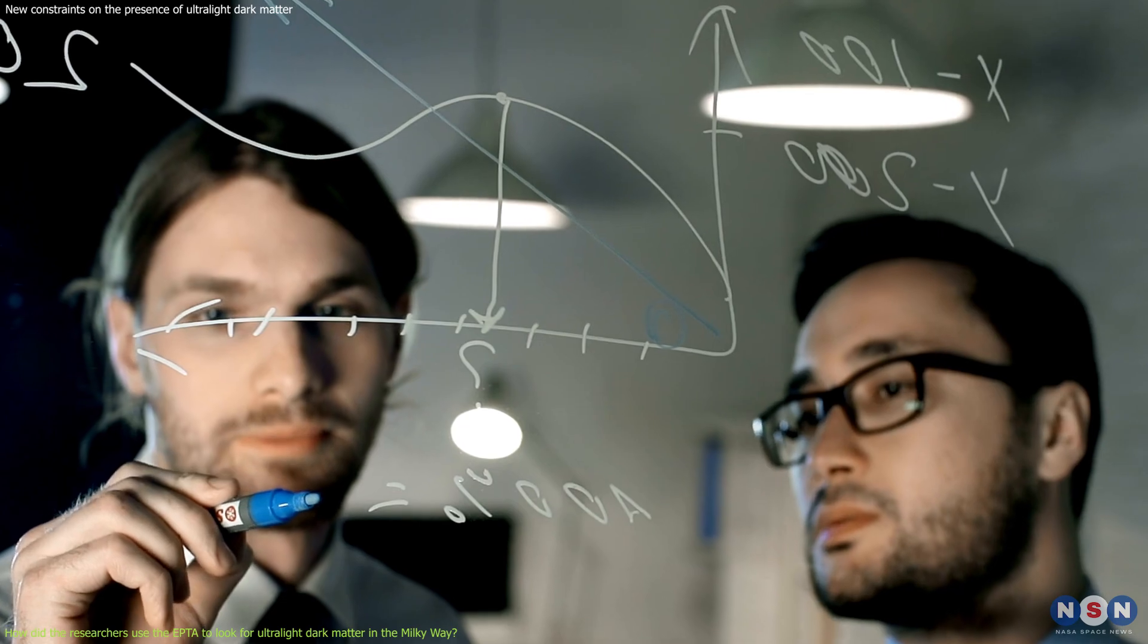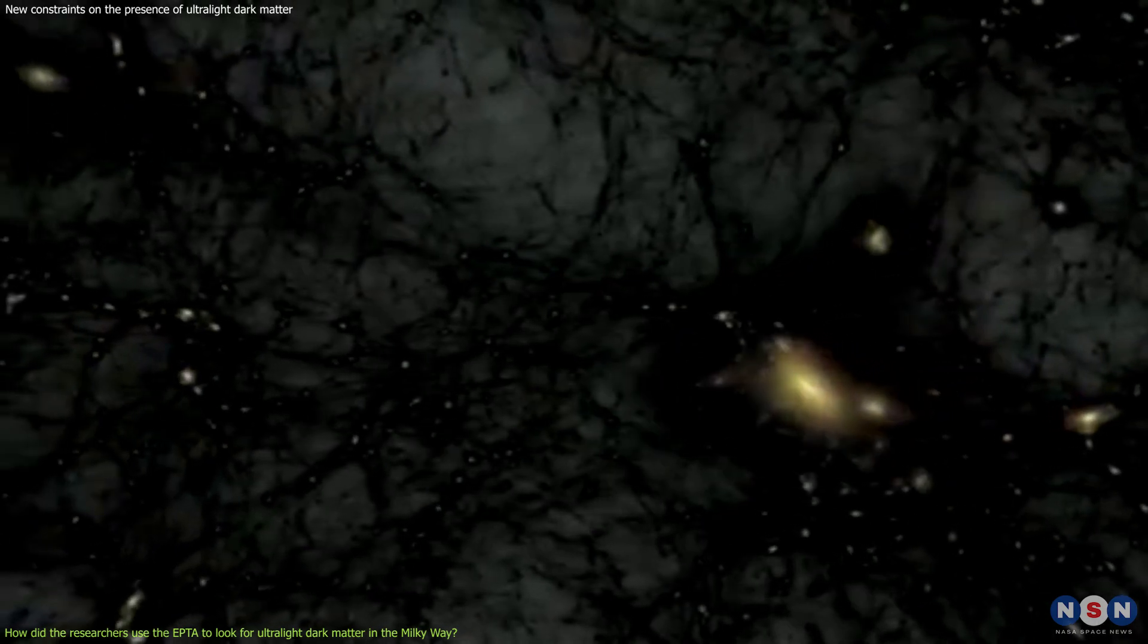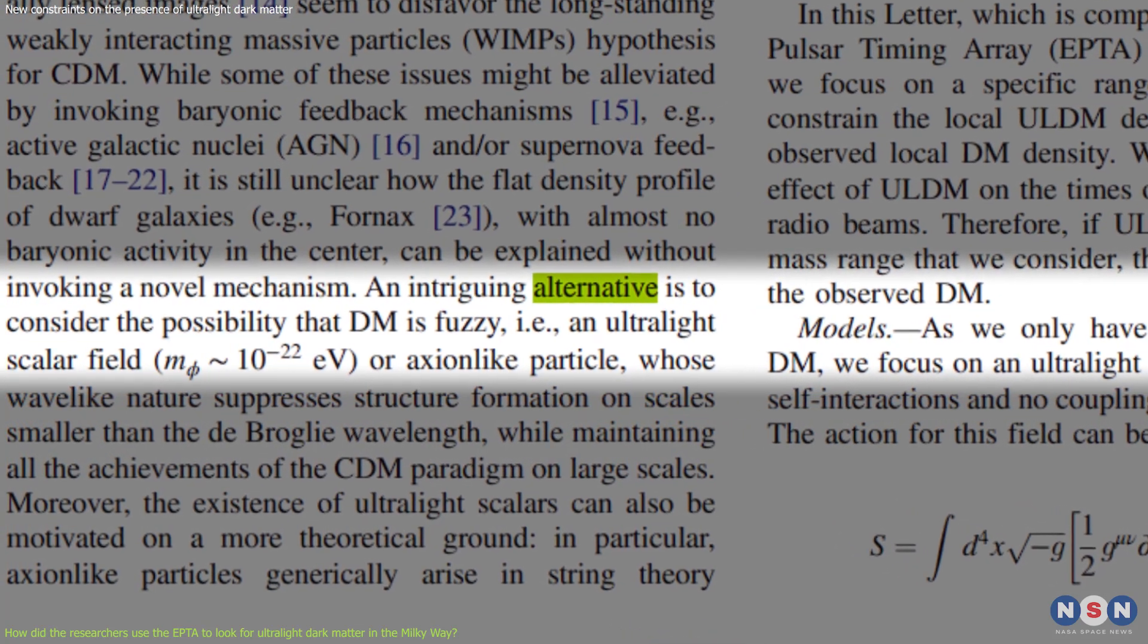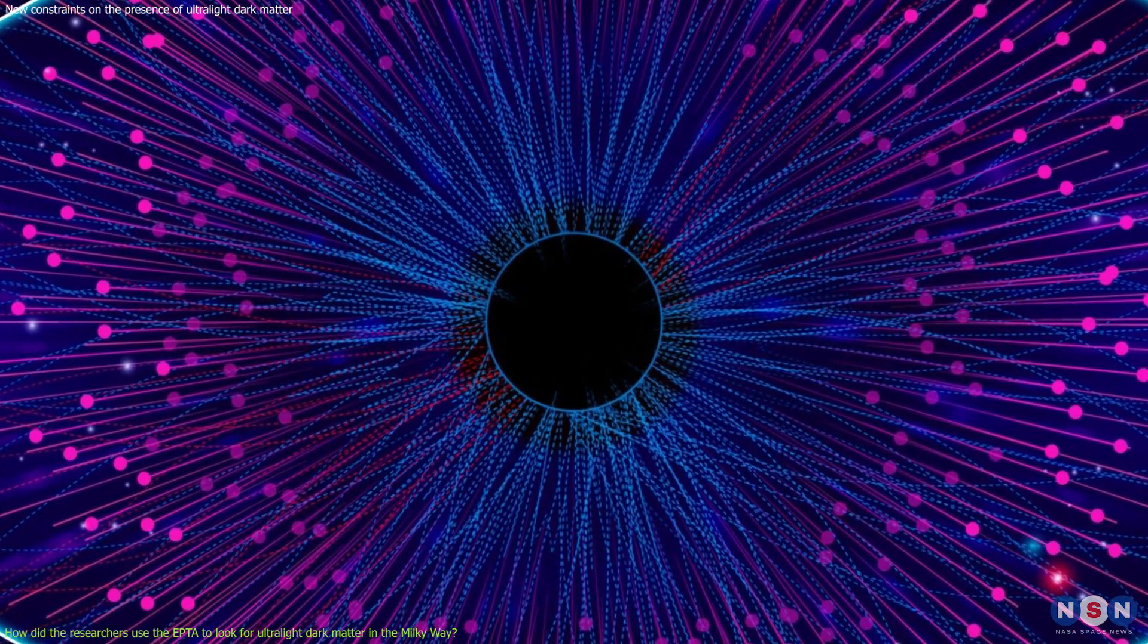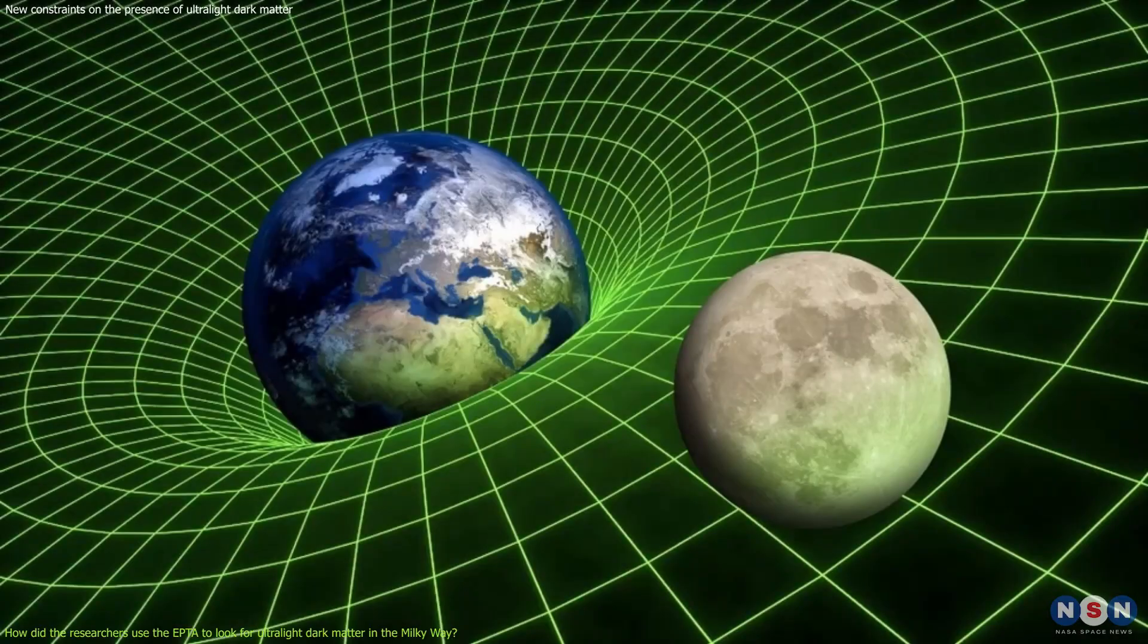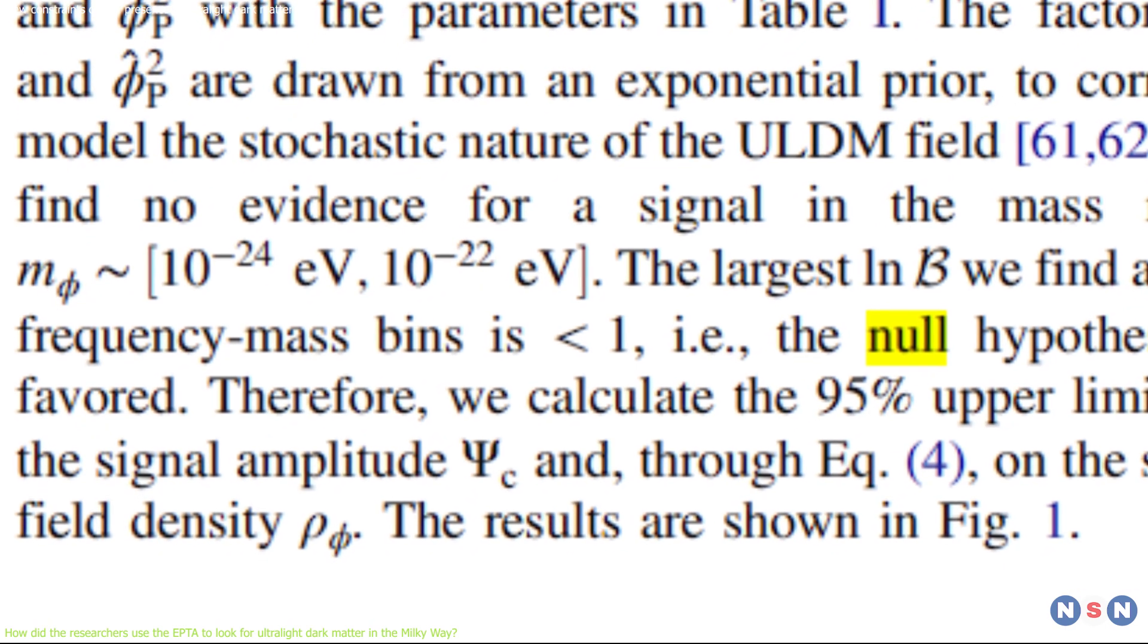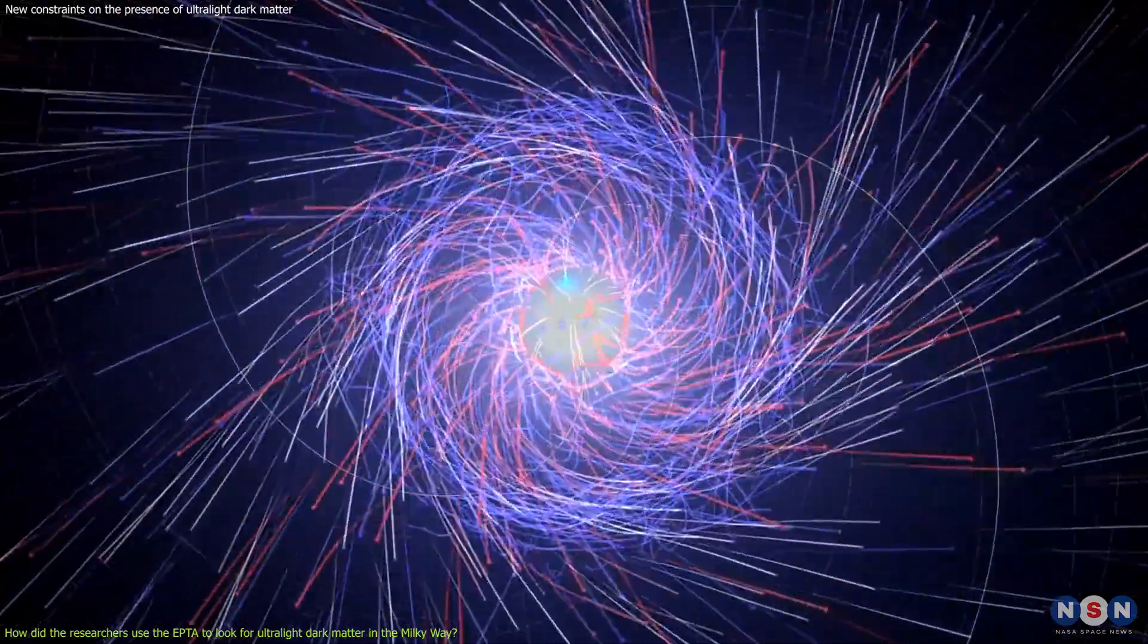The researchers tested two main hypotheses: the null hypothesis, which assumes that there is no dark matter effect on the pulsar signals, and the alternative hypothesis, which assumes that there is a dark matter effect caused by ultralight particles. They also tested different values of the mass and density of the axion-like particles and different scenarios of the gravitational theory, such as general relativity or modified gravity. They found that the null hypothesis is more likely than the alternative hypothesis for all the cases they considered, and that they can exclude a range of possible masses and densities for the axion-like particles.